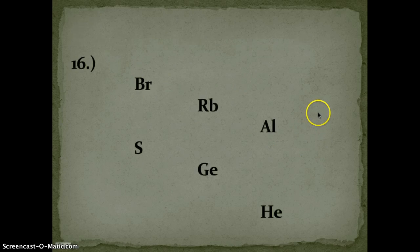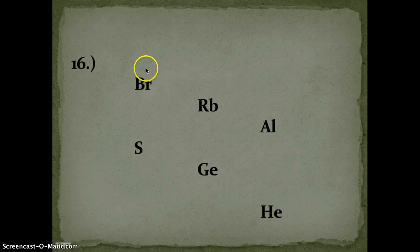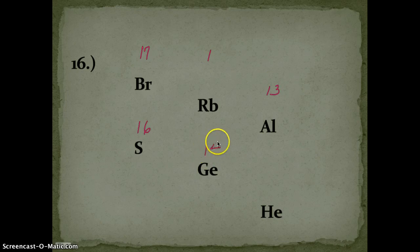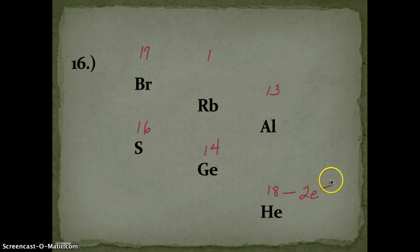All right, in the home stretch now. I do have a specific heat problem that I want to add, and I'm going to have you add that to the back. I'll get to that in a little bit. At any rate, we're going to do Lewis dot structures for all of these. The first thing we want to do is determine what group these are in. Bromine is in group 17, rubidium is in group 1, aluminum is in group 13, sulfur is in group 16, germanium is in group 14, and helium is in group 18. But remember, it only has two electrons, so it can't have an octet.